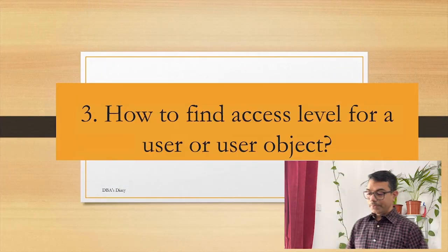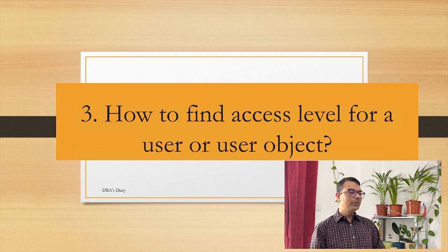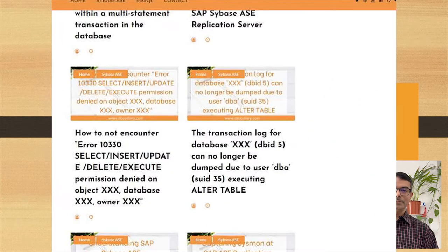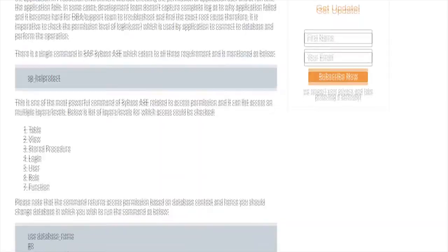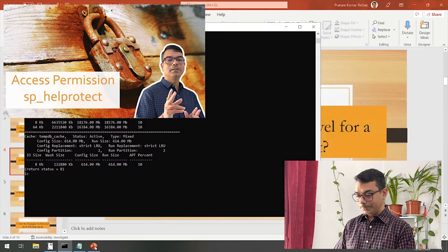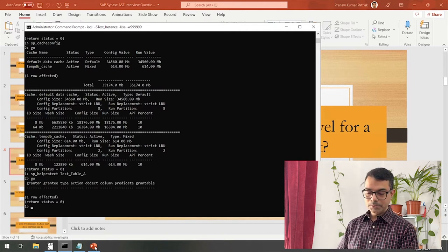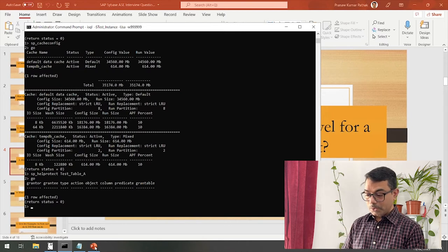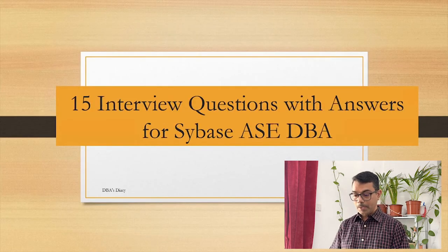Third question: how to find access level for a user or user object. The command is sp_helpprotect — a simple, single command. I have covered this in a post and in a previous video. Let me show you: sp_helpprotect with a test table. This gives all the permission levels. If no permissions have been granted, nothing will come back. You can go through that post for details.